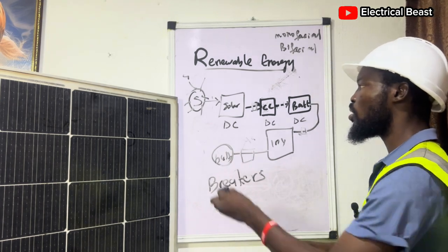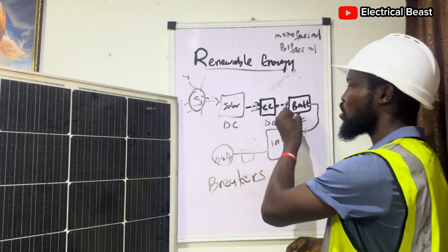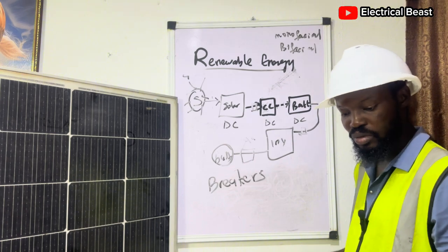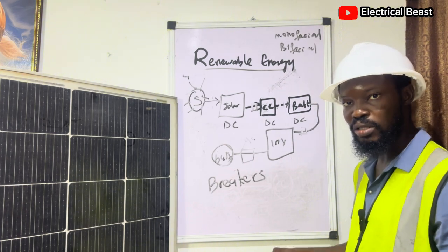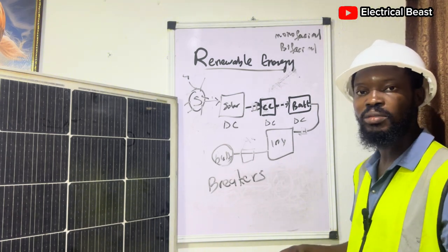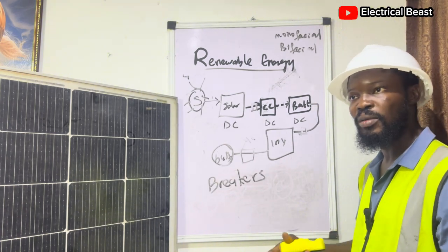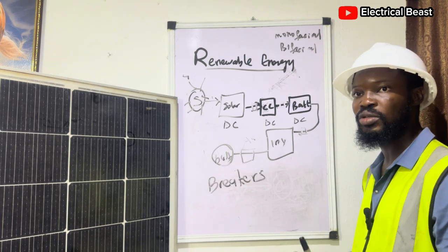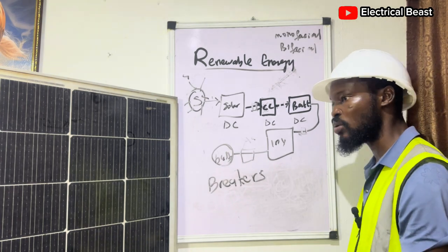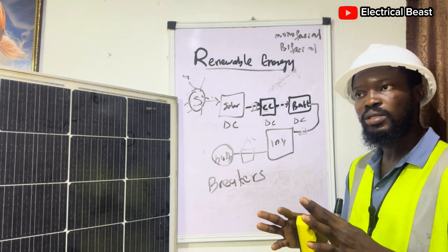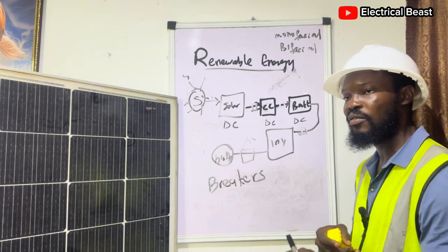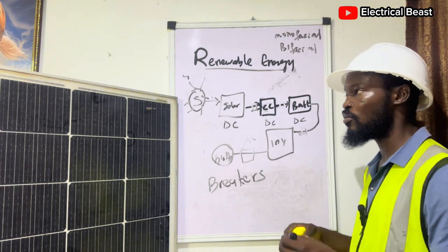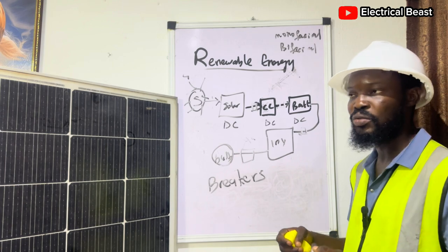All these system components are interconnected with cables — different kinds of cables. We have DC cables and AC cables of different sizes: 10mm, 6mm, 25mm for battery cables, 50mm, and so on, depending on the size of the system you want to install.